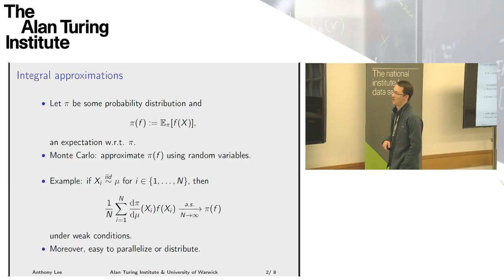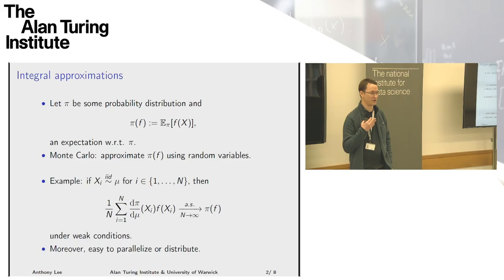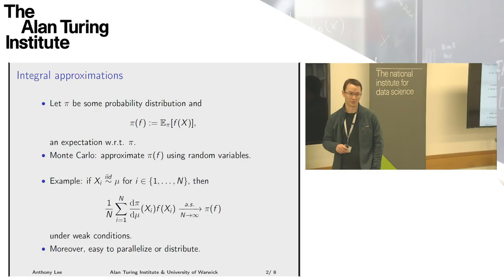Just to set up the kind of problem I'm going to be talking about: in Monte Carlo, one of the main things that we try to do is approximate integrals, and in particular we often try to approximate integrals which are expectations with respect to some probability distribution. So let pi be a probability distribution, and I'm going to denote pi of f as the expectation of f of x when x is distributed according to pi.